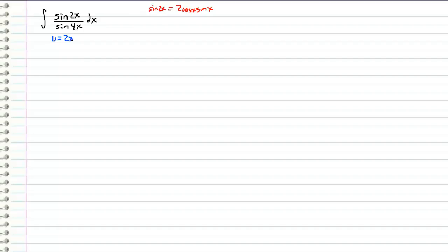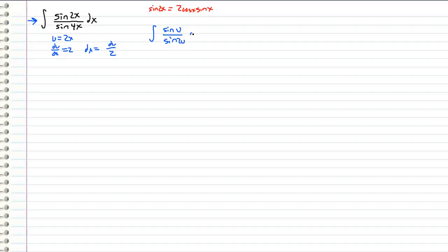I'm going to let u equal 2x. Therefore, du/dx is equal to 2, and therefore dx is equal to du over 2. So I'm going to substitute this information into our integral and get the following: the integral of sine of u over sine 2u du, with a 1/2 factor that I'm going to write on the outside.